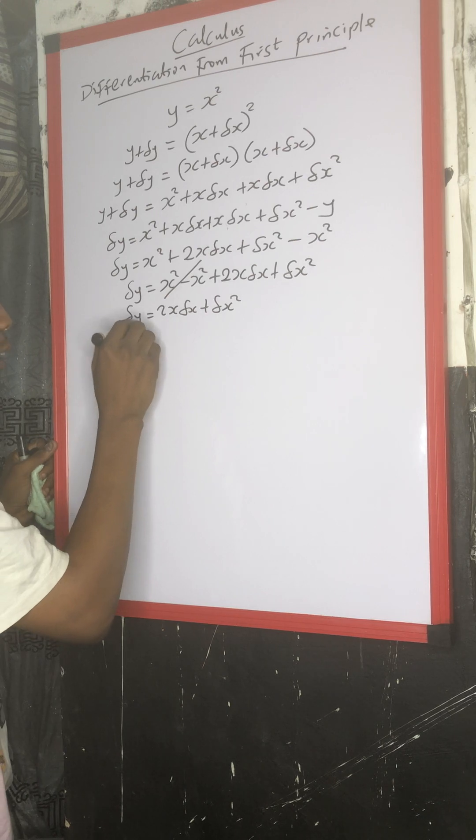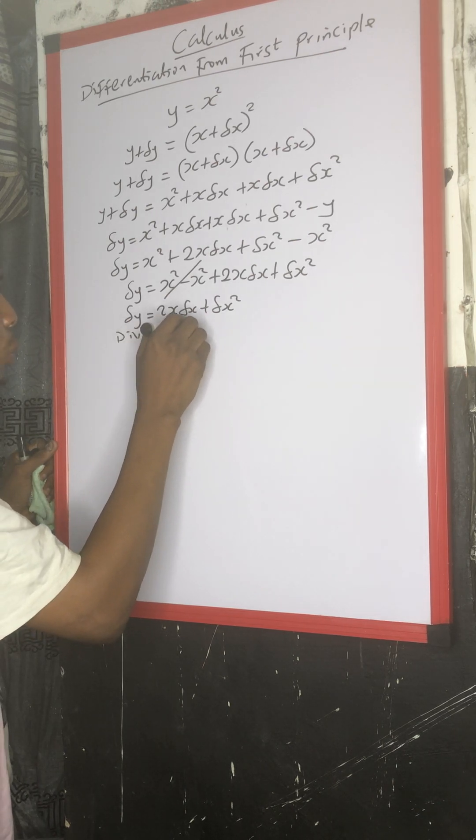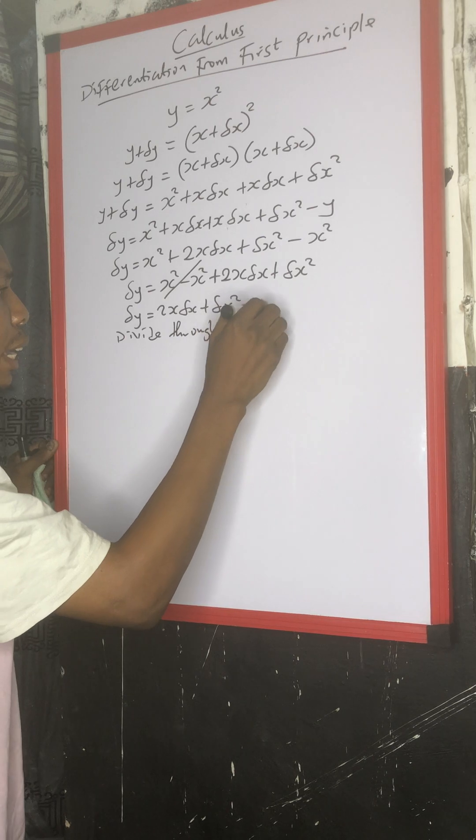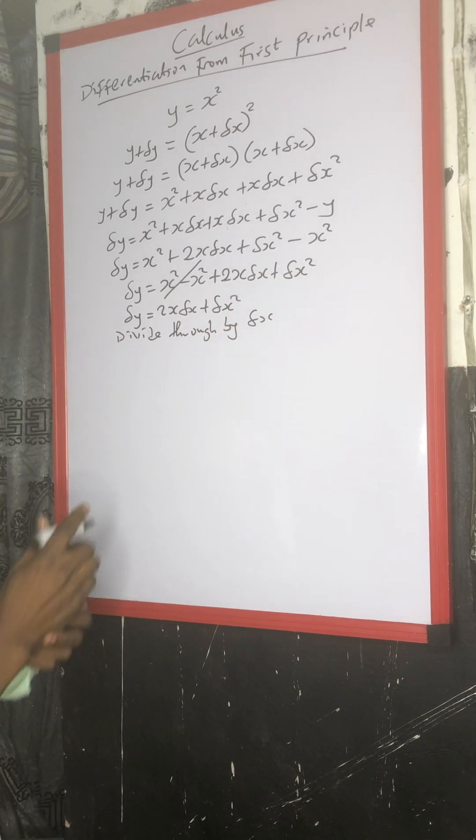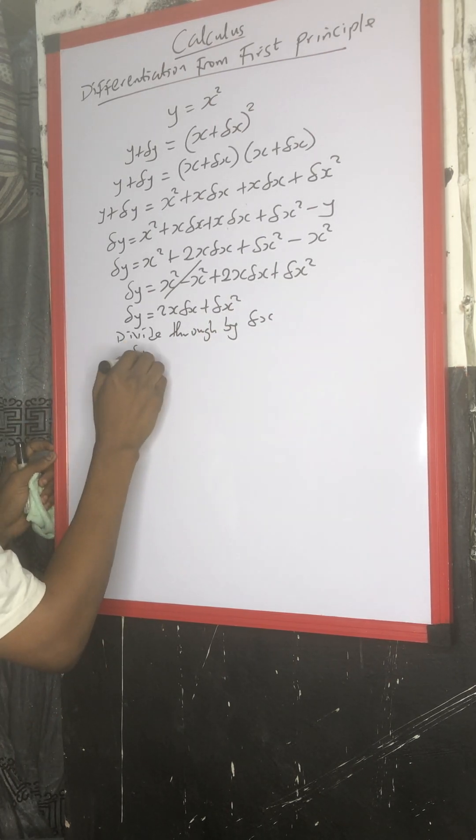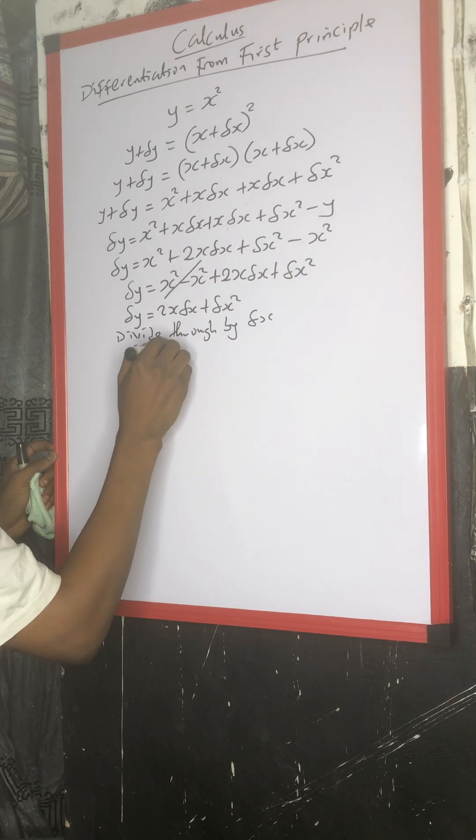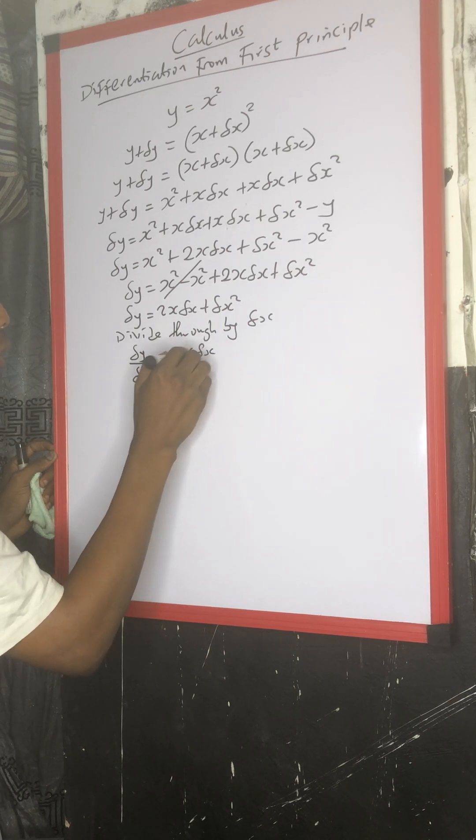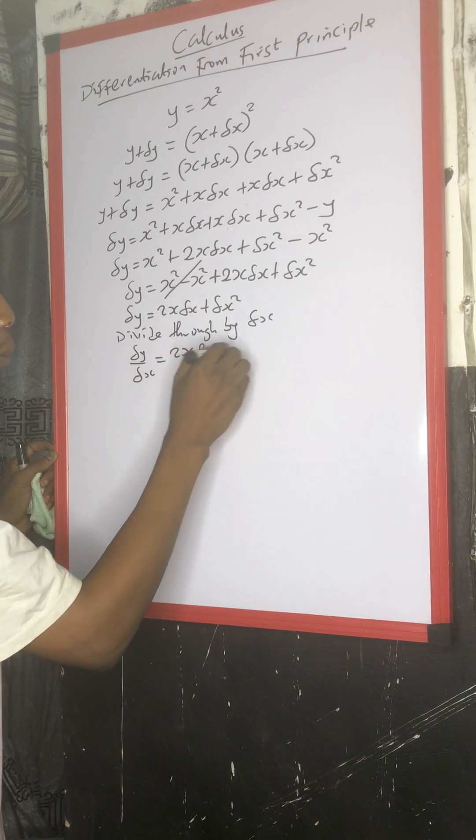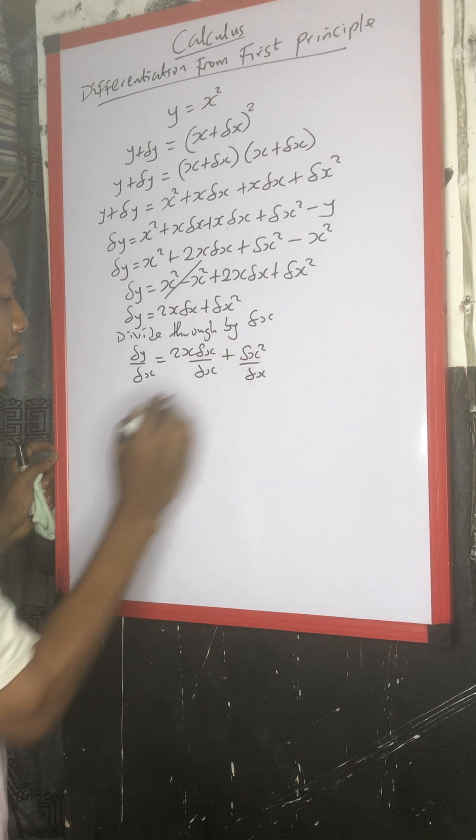You divide through by change in x. Dividing through by change in x, we have change in y over change in x equals to 2s change in x over change in x, then plus change in x squared over change in x.